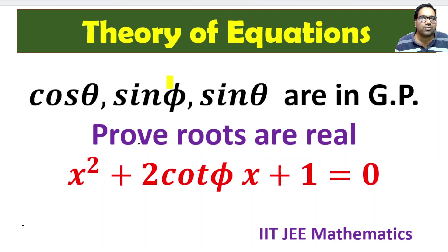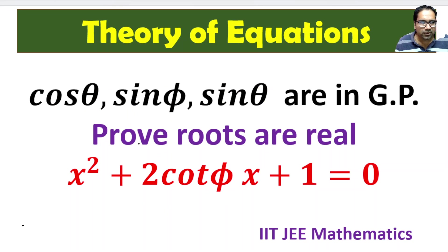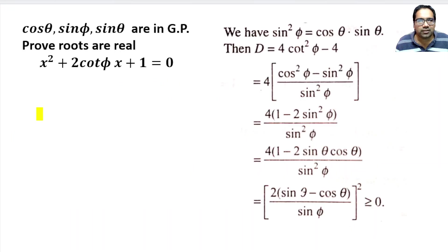This φ is related to θ because these three are in geometric progression. When cos θ, sin φ, and sin θ are in geometric progression, that means b² = ac — the square of the middle term equals the product of the outer terms. So sin²φ should be equal to the product of cos θ and sin θ.